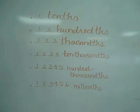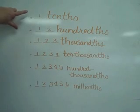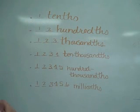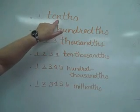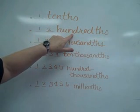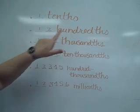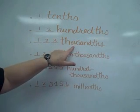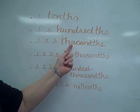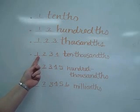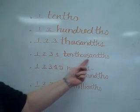Looking at the place values on the smaller or fractional side of your numbers: if you have 1 place, it is tenths — this would be 1 tenth. If I've got 2 places, I'm going to be in hundredths — this would be 12 hundredths. Three places give me thousandths — this would be 123 thousandths. Four places is ten-thousandths, so this would be 1,234 ten-thousandths.